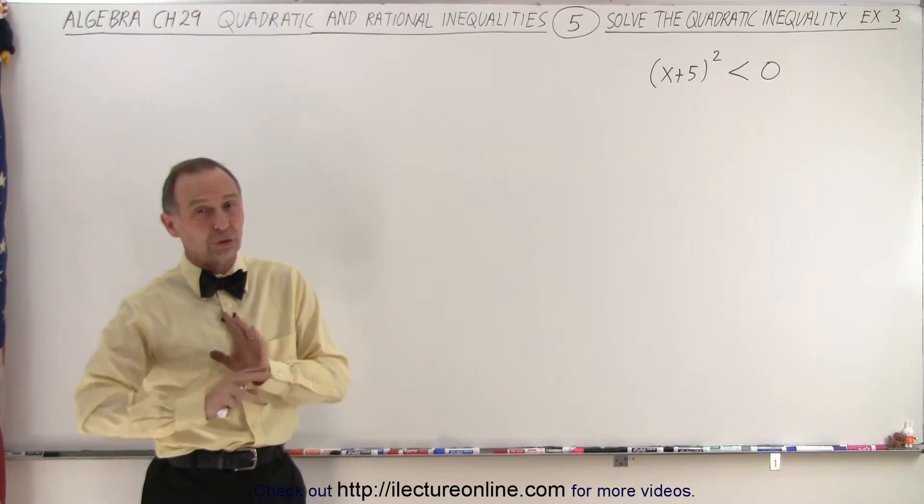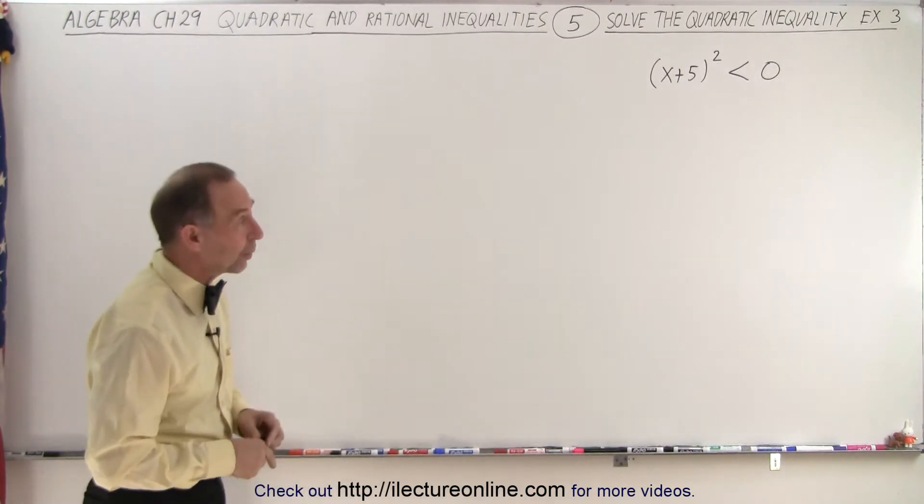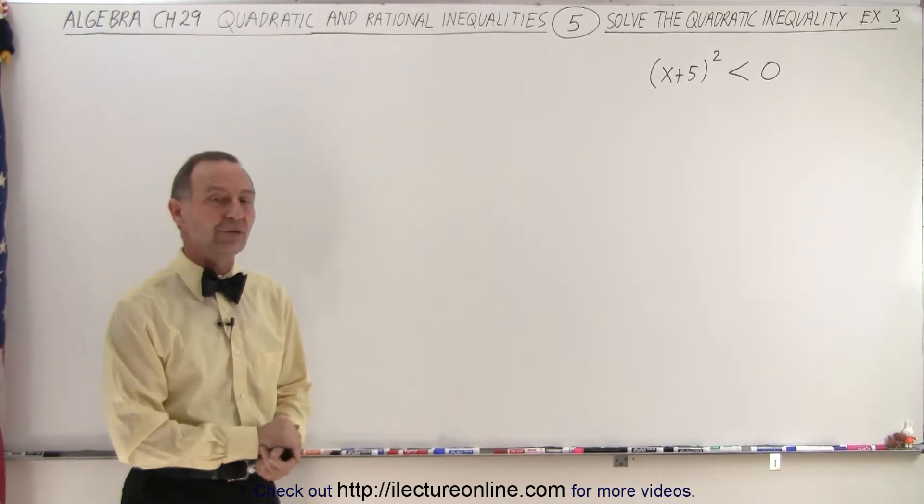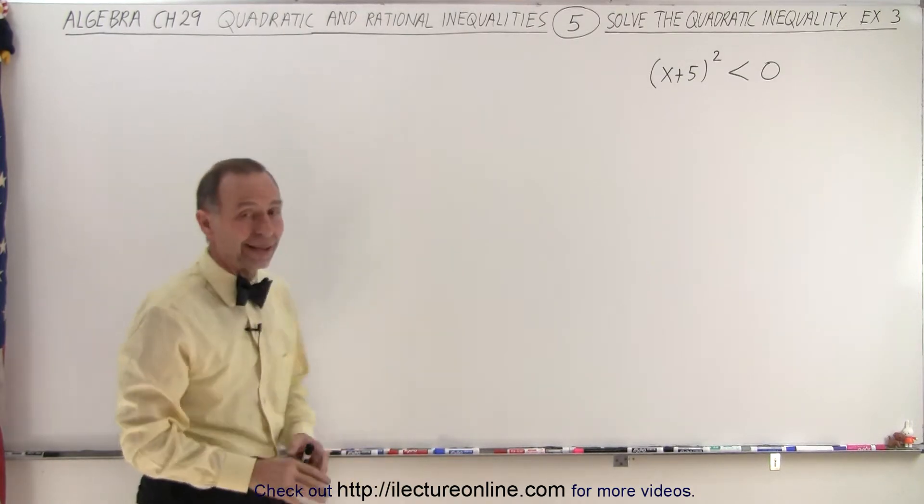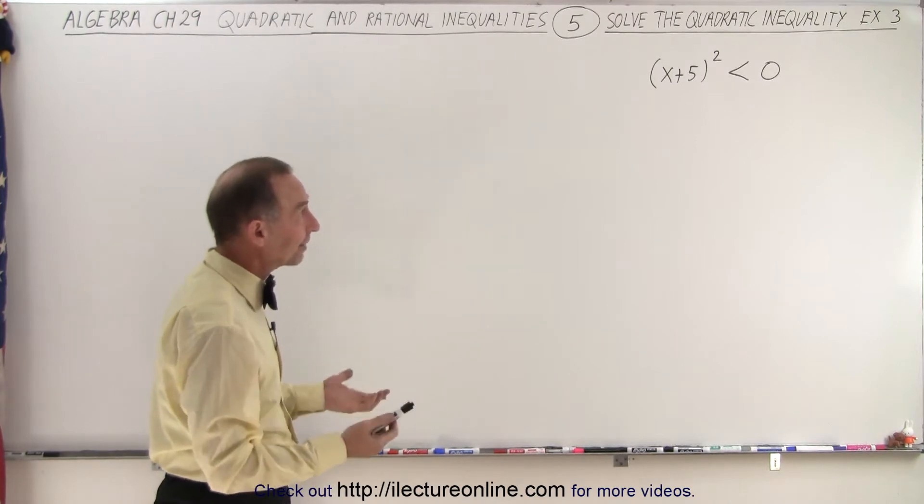But instead, we first are going to just follow the normal way of solving quadratic inequalities. Notice the first thing we want to do is put it into standard form. Standard form means putting the expression on the left side, zero on the right side. It's already in standard form, so we can go on to the next step.